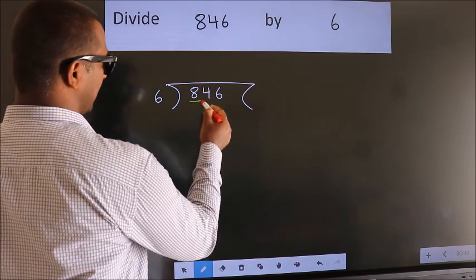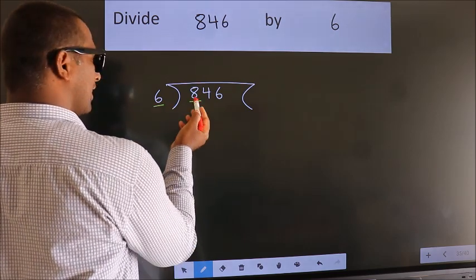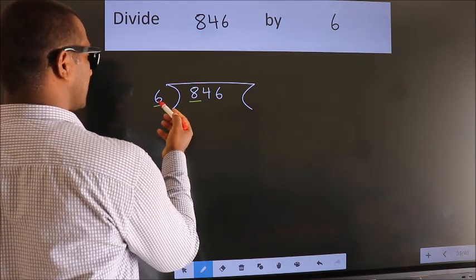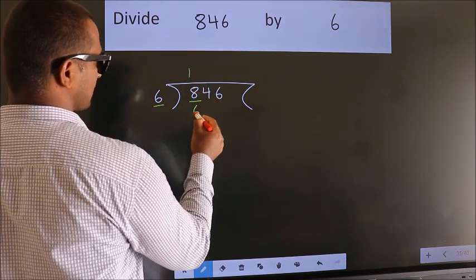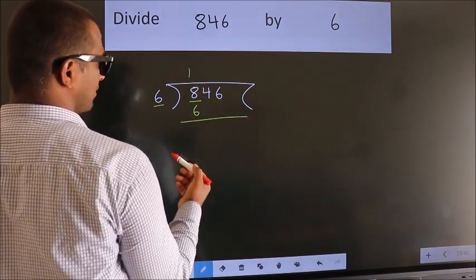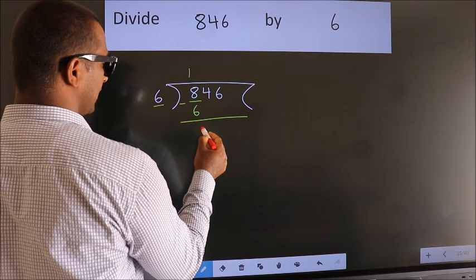Here we have 8, here 6. A number close to 8 in 6 table is 6 once 6. Now we should subtract. We get 2.